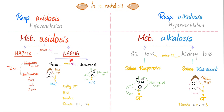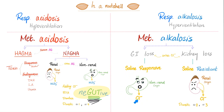NAGMA is divided into two groups based on the urine anion gap — not the serum, the urine anion gap. If the urine anion gap is zero or positive, it's a kidney problem. If the urine anion gap is negative, then the problem is in the gut. The difference between a kidney problem and a gut problem is who is losing the bicarbonate. Metabolic alkalosis is divided into saline-responsive or saline-resistant. Saline-responsive: the gut is losing chloride — not bicarbonate, chloride this time. Saline-resistant: the kidney is losing the chloride.